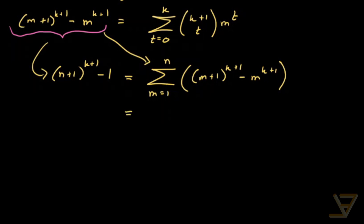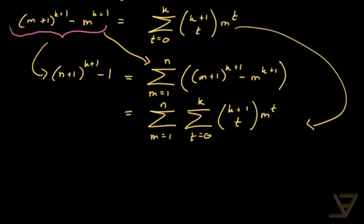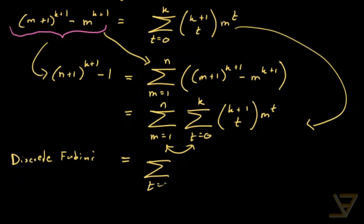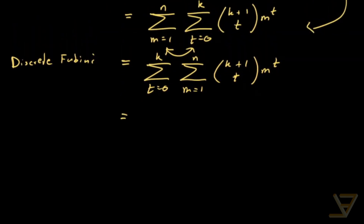So we've telescoped and that's what we got. Now we're going to use the binomial theorem result. We get the sum from m equals 1 through n, with an inner sum from t equals 0 through k, of (k+1 choose t) times m to the t. We're going to apply the discrete Fubini principle — which just means we swap the two sums, which we can do because they form full matrices.